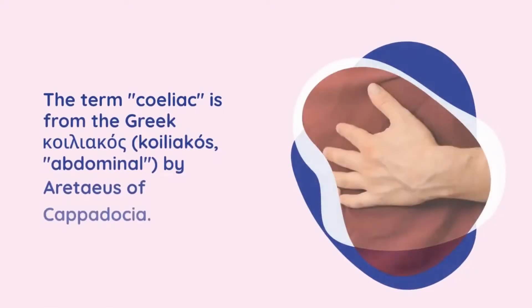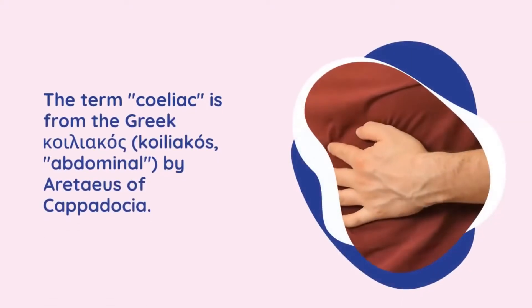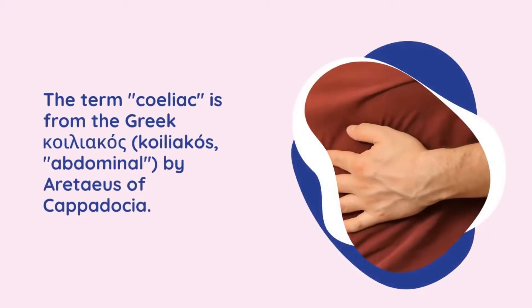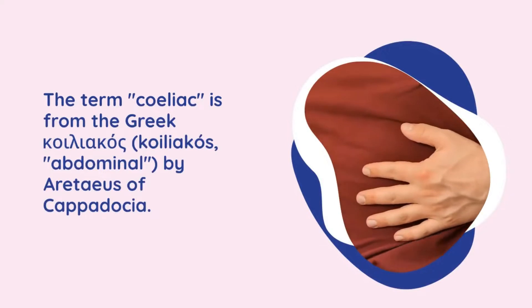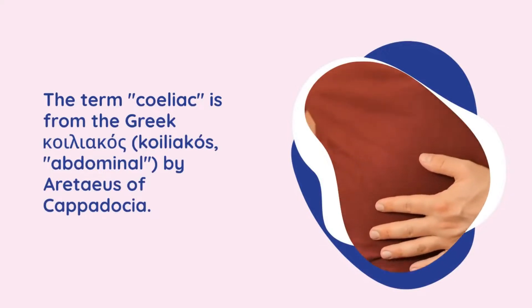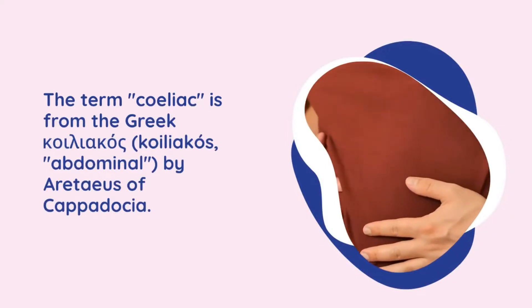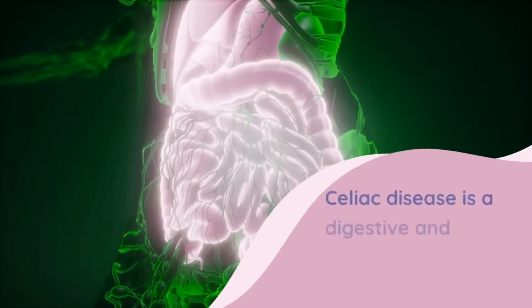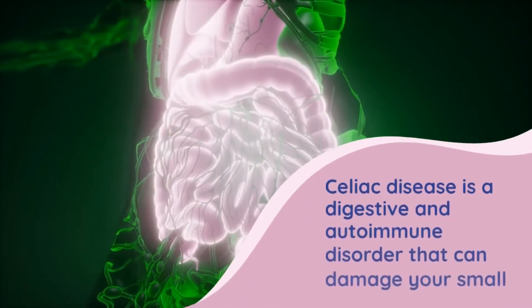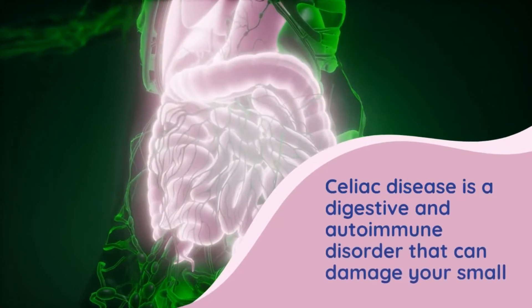The term celiac is from the Greek word kolyakos, which means abdominal, and was introduced in the 19th century in a translation of what is generally regarded as an ancient Greek description of the disease by Areteus of Cappadocia.